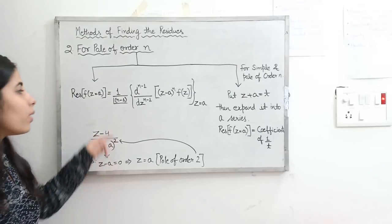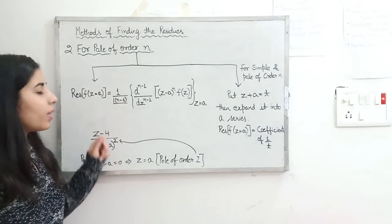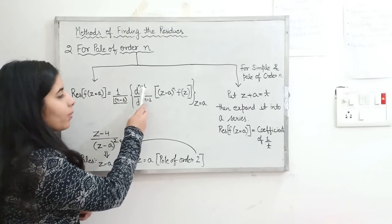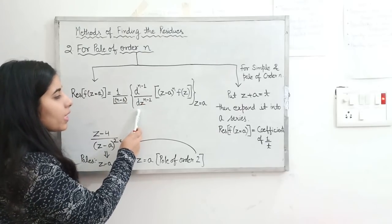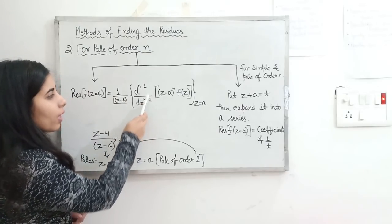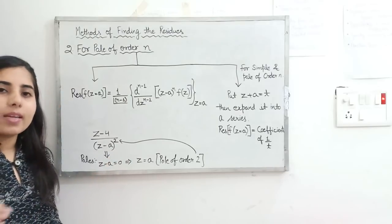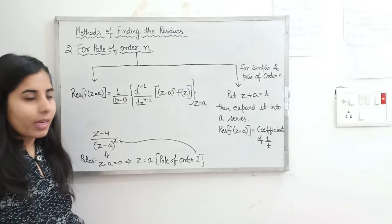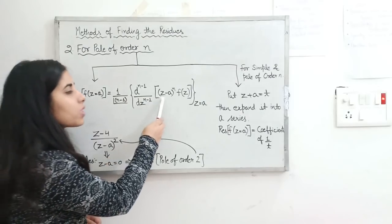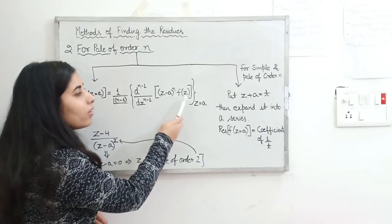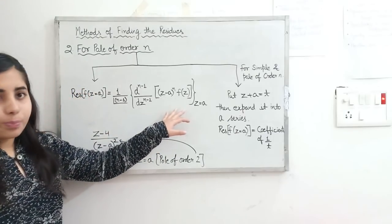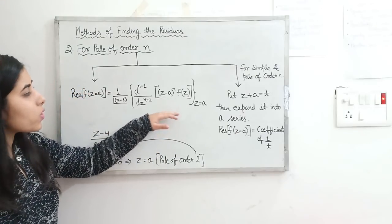The formula to find the residue at a pole of order n is: (1/(n−1)!) · d^(n−1)/dz^(n−1) of [(z−a)^n · f(z)], evaluated at z = a. You take the (n−1)th order derivative, then substitute z = a to get the residue.